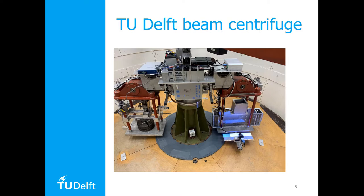The centrifuge is powered by an electric motor. One of the challenges is to transfer signals, power, and data from the fixed world to the rotating part of the centrifuge. In order to overcome this challenge, this facility has slip rings to transfer electricity and data, an onboard computer, and a data acquisition system. Of course, this is placed as close as possible to the rotation axis to reduce gravitational force during spinning.